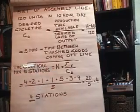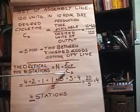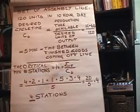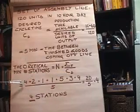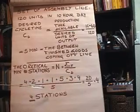This is just equal to the summation of the times divided by your desired cycle time C sub D that we just calculated here. So notice we add up all the work elements and divide by five.